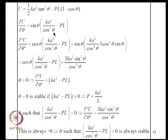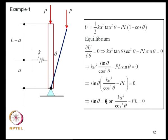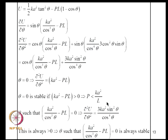To examine stability we compute ∂²U/∂θ². At θ = 0, cosθ = 1, so we get ∂²U/∂θ² = KA² − PL. The equilibrium θ = 0 is stable if this is greater than zero, i.e., P < KA²/L. So P_critical = KA²/L. For solutions from the second branch satisfying KA²/cos³θ − PL = 0, the remaining term in ∂²U/∂θ² is always positive (since KA², sin²θ, and cos⁴θ are all positive), so any θ satisfying that condition is always a stable equilibrium point.